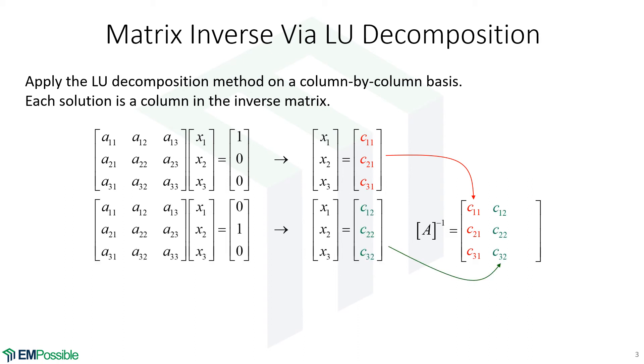We simply go one element at a time, one row at a time. We put in all zeros in this column vector on the right. We put a one now in the second column. We solve, and the answer we get is the second column in the matrix inverse.